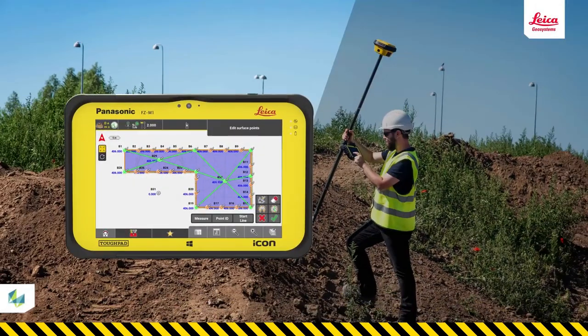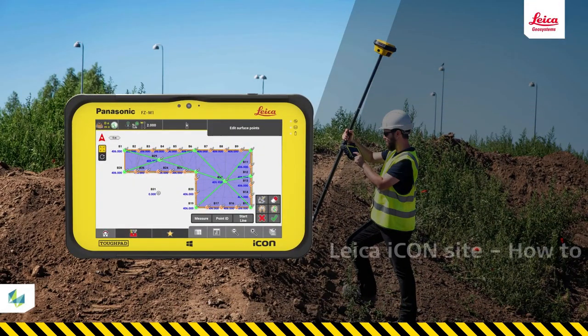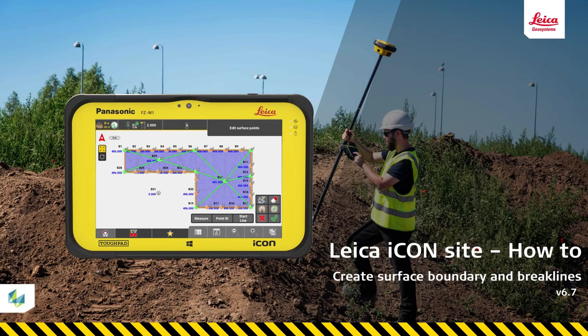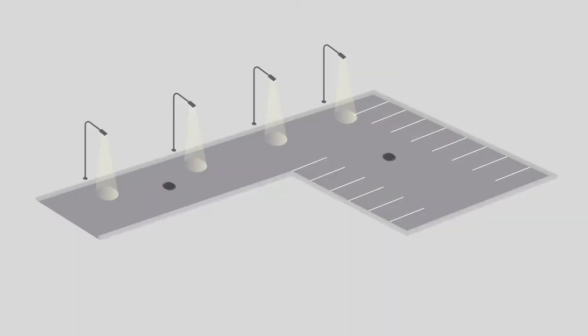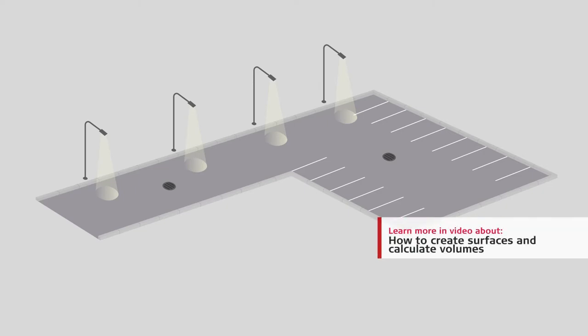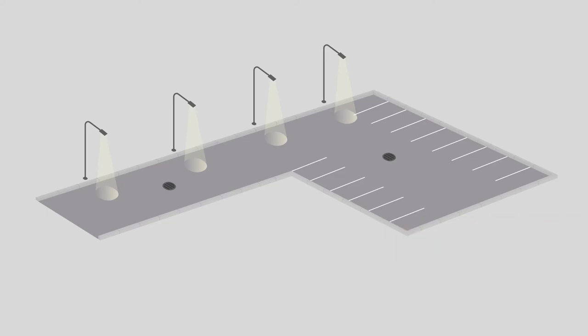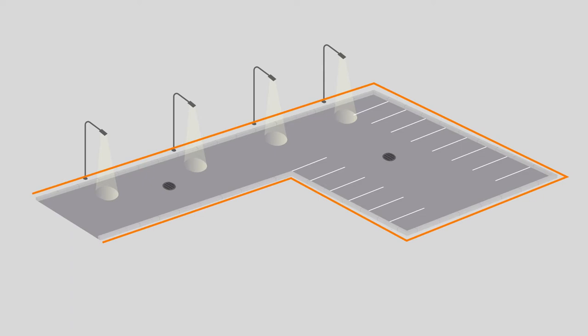In this tutorial you will learn how to add boundaries and brake lines while creating a surface and how to shift it. You will also learn how to add an expansion factor into a volume calculation. In this exercise we build the next layers of a planned parking lot. The parking lot will be L-shaped, the boundary is made of curbs and there will be two sewage covers. To guarantee the water flow on the surface we will add brake lines from the edge points to the sewage covers.